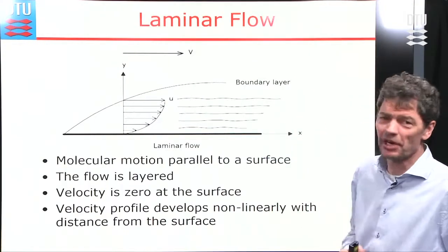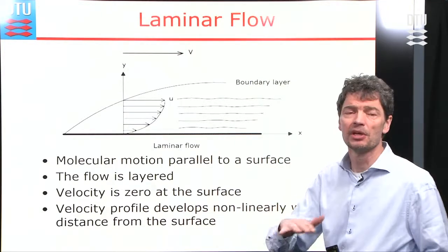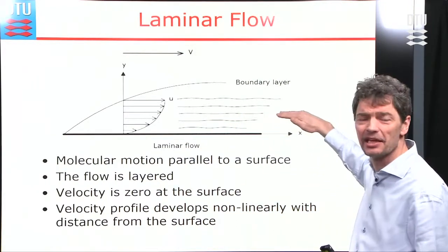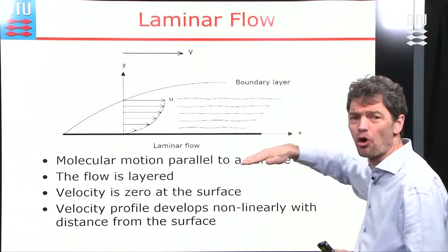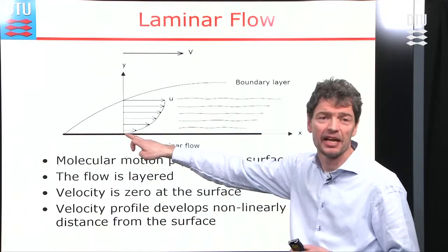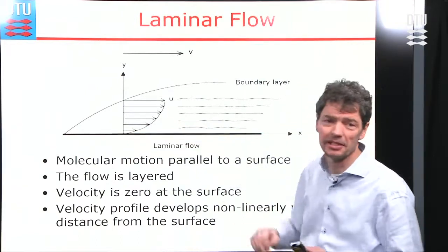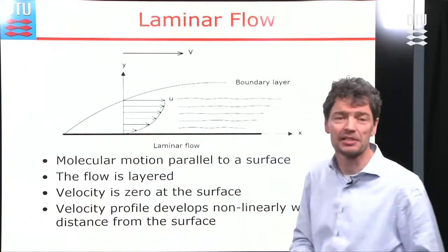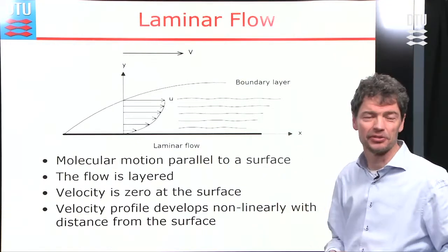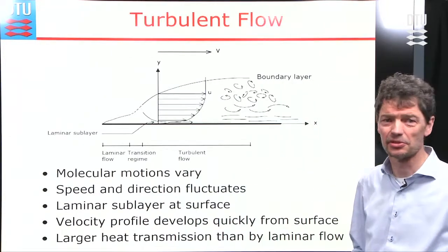When you have a flow, you should characterize its nature. For very calm, slow laminar flow, it is characterized by molecular layers flowing parallel to one another. The velocity is zero at the surface, and then increases non-linearly with distance away from that surface. You have to know where you are in relation to the surface.